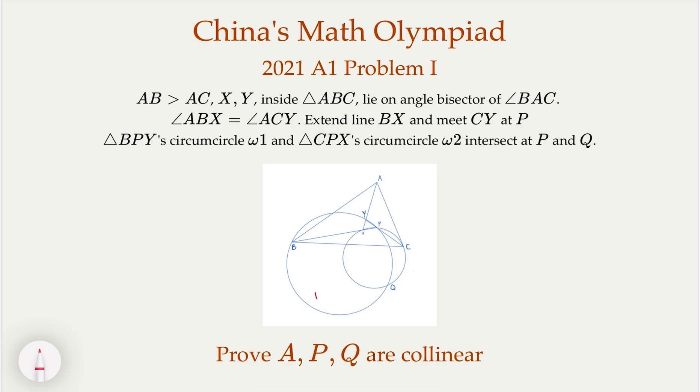This is China's math olympiad 2021 geometry problem. Here we're given ABC triangle, the angle bisector here, and have two points X, Y on the bisector line here, such that angle ABX equals angle ACY. And this angle is bisector.